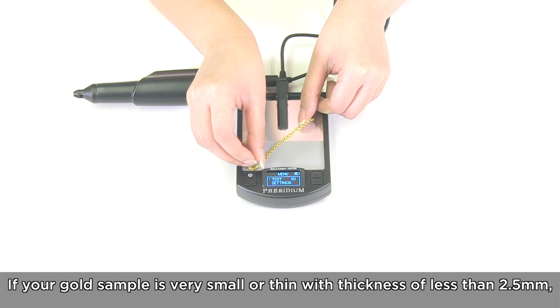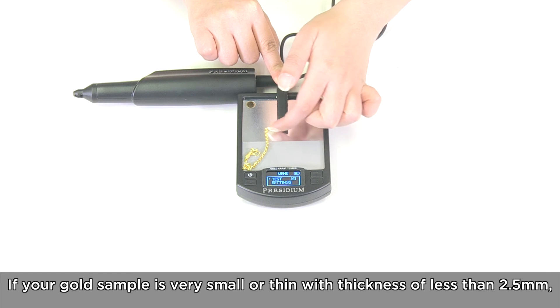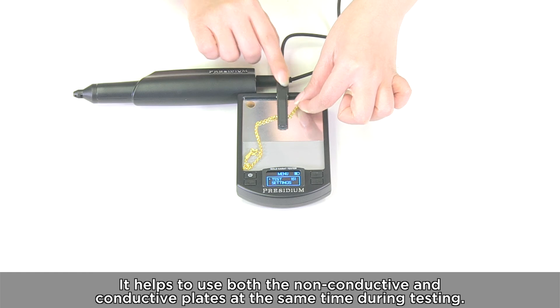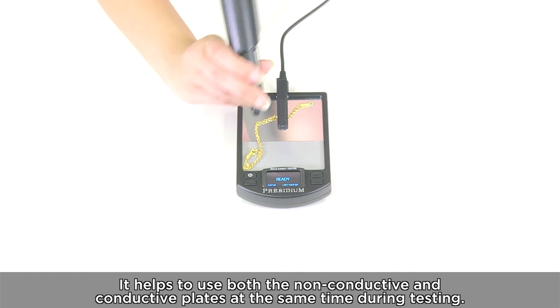If your gold sample is very small or thin with thickness of less than 2.5mm, it helps to use both the non-conductive and conductive plates at the same time during testing.